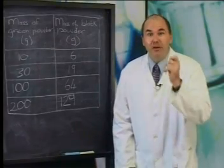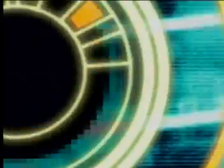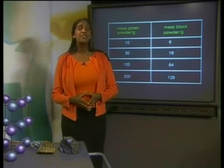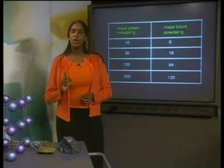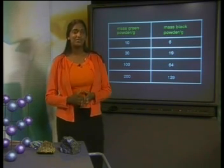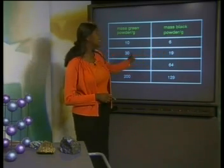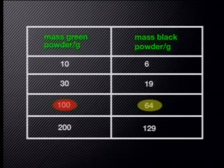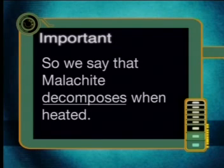Proust heated many different samples to make sure of this discovery, but he always found that the malachite lost mass when he heated it. 19 grams is less than 30 grams. Heating 100 grams of green powder forms 64 grams of black powder. This means that the black solid is a new substance. New substances form during chemical changes, so heating malachite causes it to change chemically. Since malachite loses a lot of its mass during heating, it breaks down to form a simpler substance. This breaking down into simpler substances is called decomposition. So we say that malachite decomposes when heated.